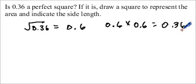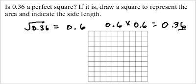So we know that 0.36 or 36 hundredths is a perfect square. So because it is now we need to draw a square to represent the area and indicate the side length. So because it is 36 hundredths let's start by getting a hundredths grid. So here we have a hundredths grid. Now we just have to represent 0.36 as a square.